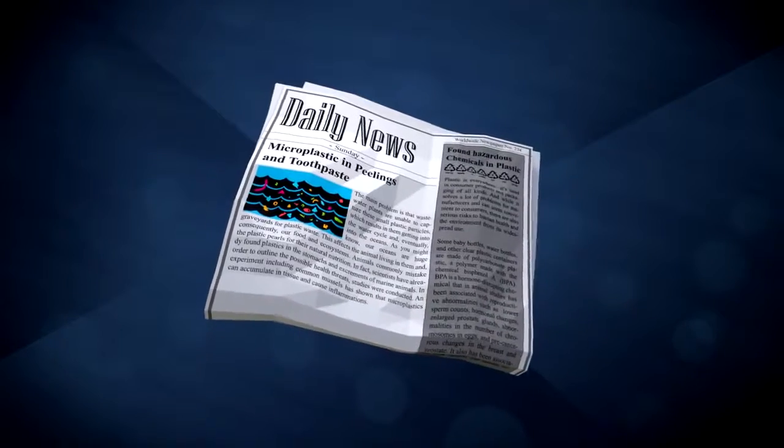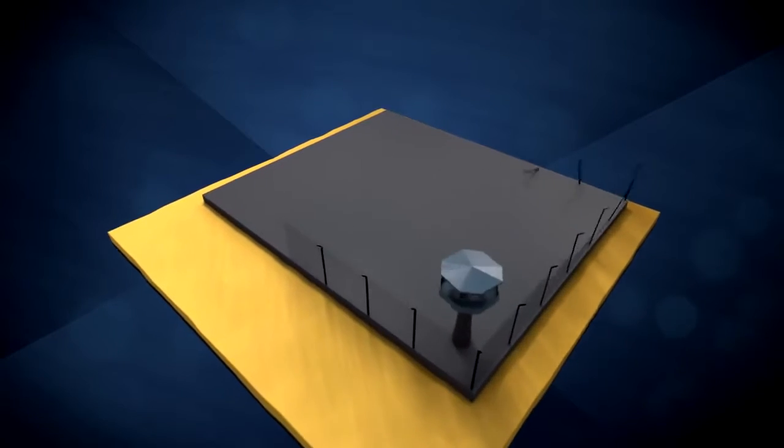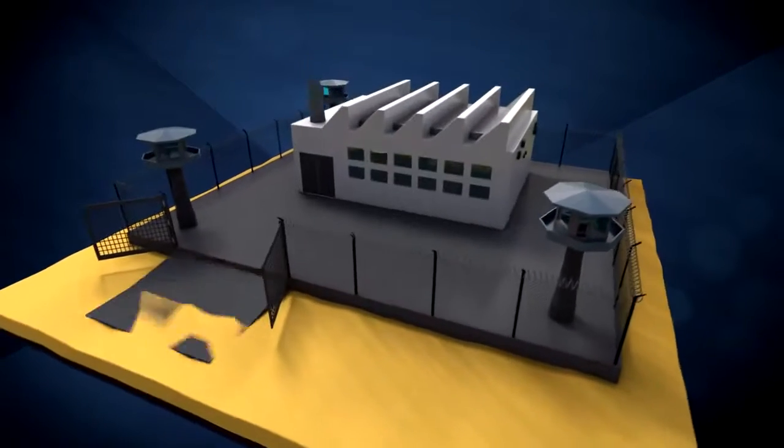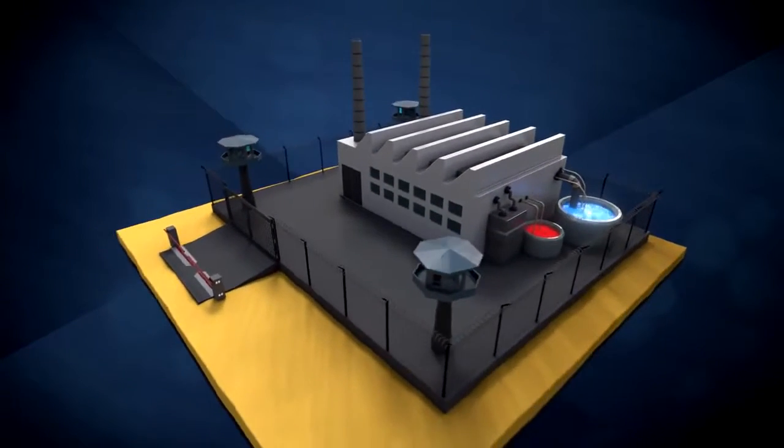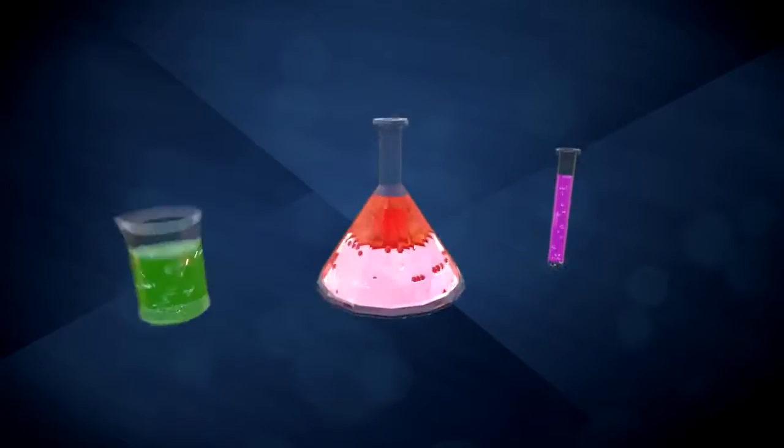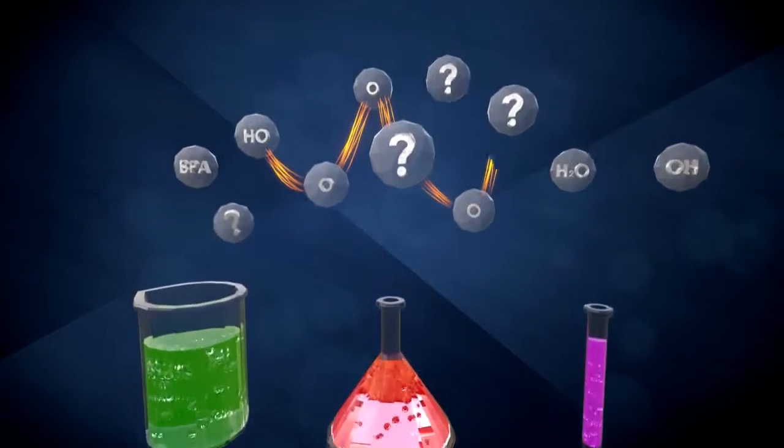The plastic industry tries to cover up any scandals and runs a gigantic lobbying campaign in order to prevent stricter laws or inquiries. Plastic factories are veritable fortresses. The plastic production processes are tightly kept secret.